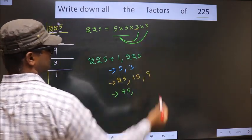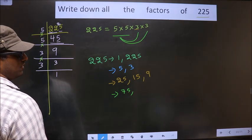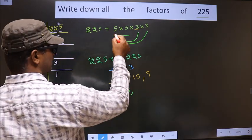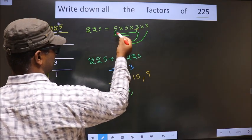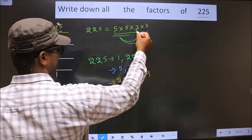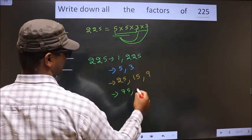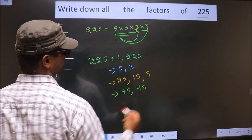Now, if I combine with this 3, again I get 75 only. Now, you take these two numbers. 5×3, 15. You combine with this. 15×3 is 45. Okay.